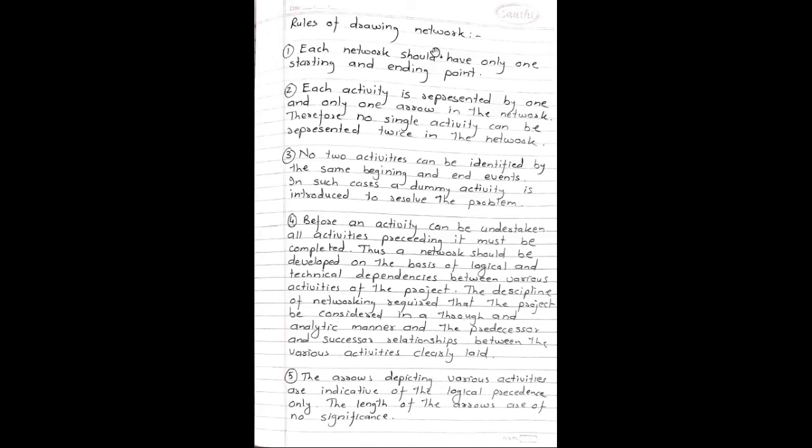Rules of drawing network. First rule: Each network should have only one starting and ending point. Second rule: Each activity is represented by one and only one arrow in the network. Therefore, no single activity can be represented twice in the network. Third rule: No two activities can be identified by the same beginning and end events. In such cases, a dummy activity is introduced to resolve the problem.